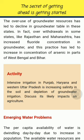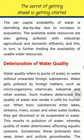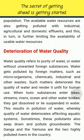Intensive irrigation in Punjab, Haryana and Western Uttar Pradesh is increasing salinity in the soil and causing depletion of groundwater. Emerging Water Problems: The per capita availability of water is dwindling day by day due to increase in population. The available water resources are also getting polluted with industrial, agricultural and domestic effluents, which is further limiting the availability of usable water resources.